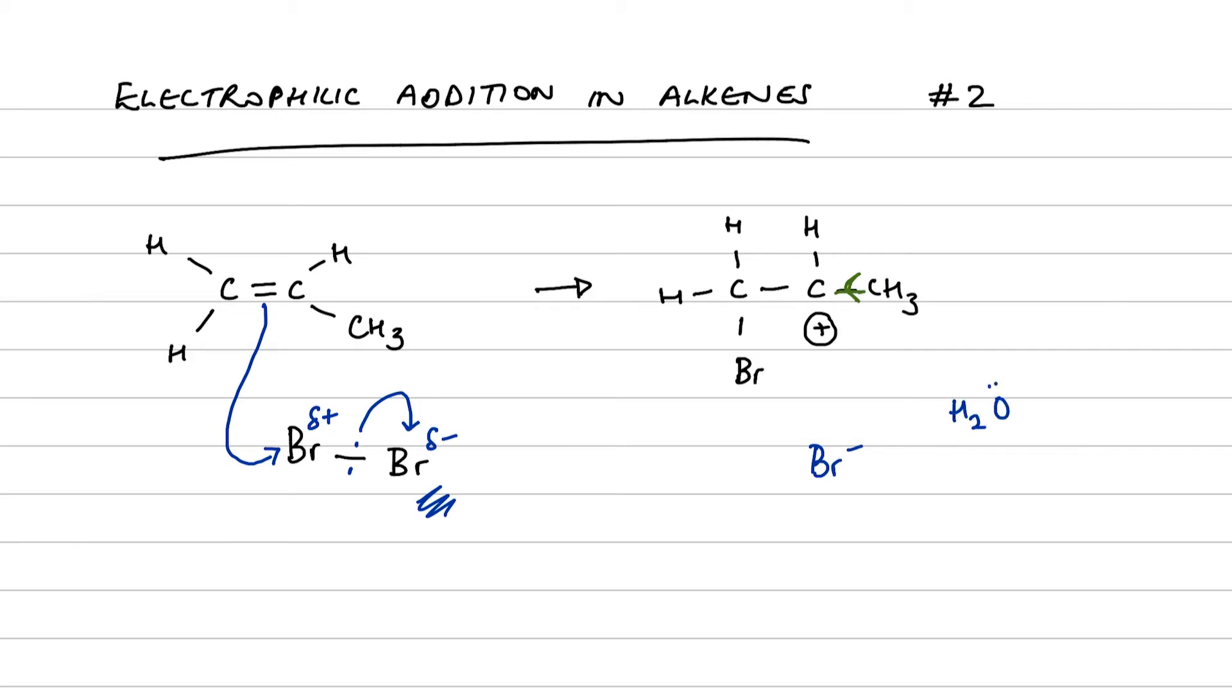But we have also got water present, and water can behave as a nucleophile because it's got a lone pair of electrons on the oxygen which can be used to make a covalent bond with a positively charged carbon atom. So two nucleophiles. The bromide ion is the stronger of the two nucleophiles because it's actually negatively charged rather than just using lone pairs from a neutral molecule, but water molecules are in excess by a huge number compared to the bromide ions.